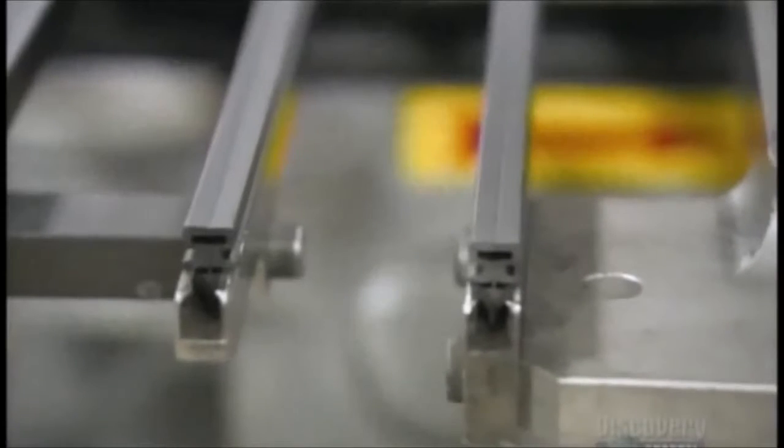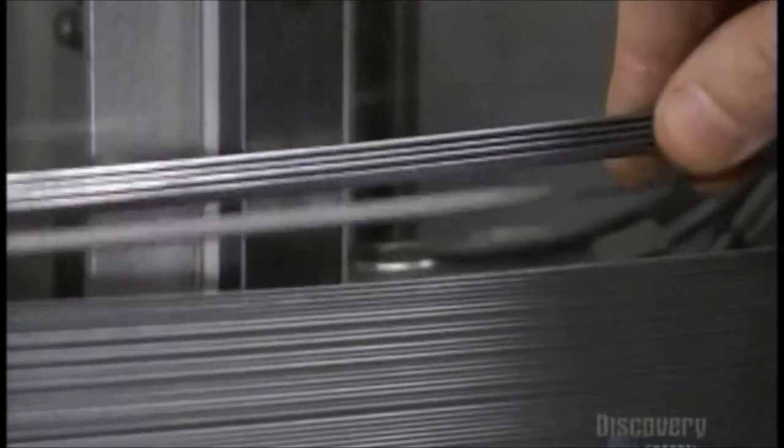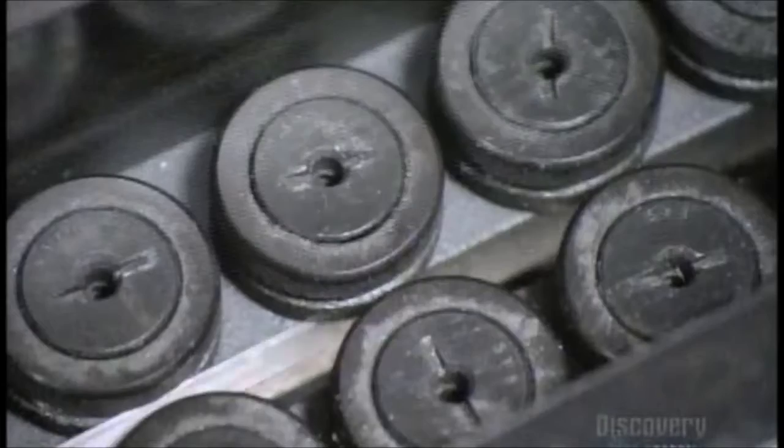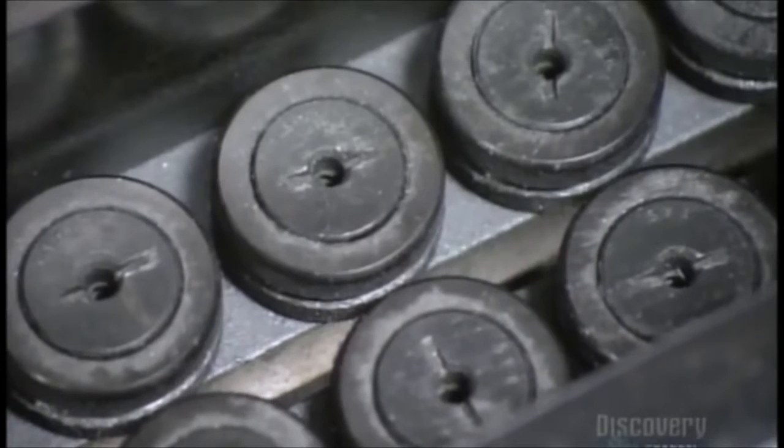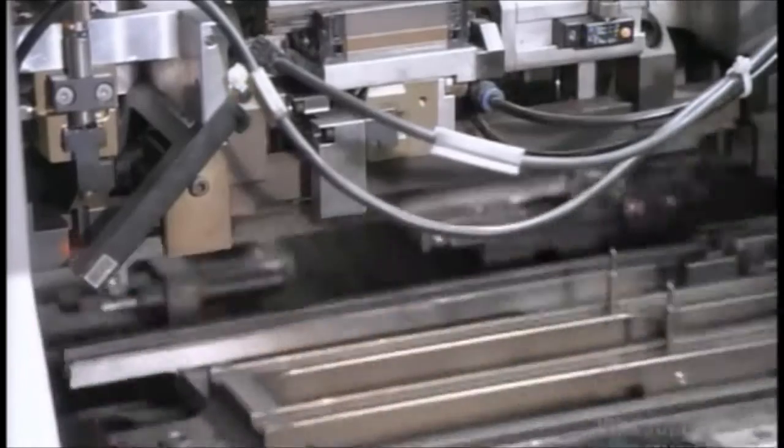In the center of the wiper blade is an opening into which a machine will insert a metal tension strip. It serves to press the blade against the windshield and hold its shape. The machine applies pneumatic pressure to literally blow the strips through the length of the blades.